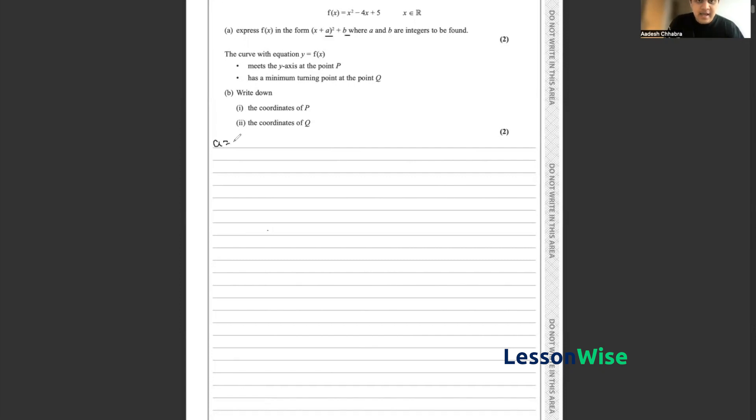So in essence, a would equal -4 divided by 2, and so here we have the value of a is equal to -2.